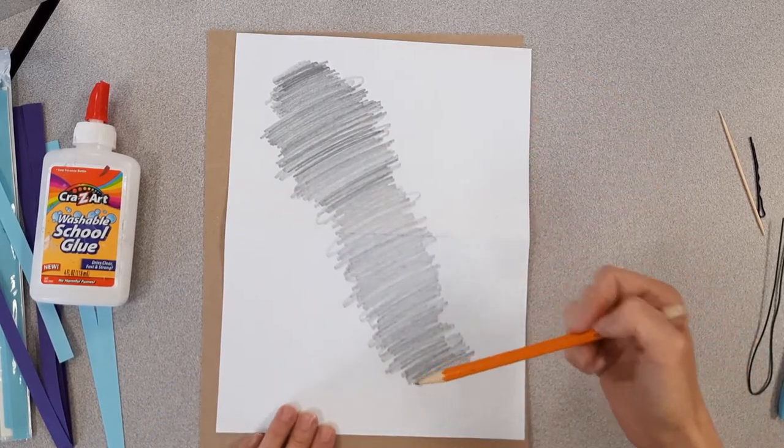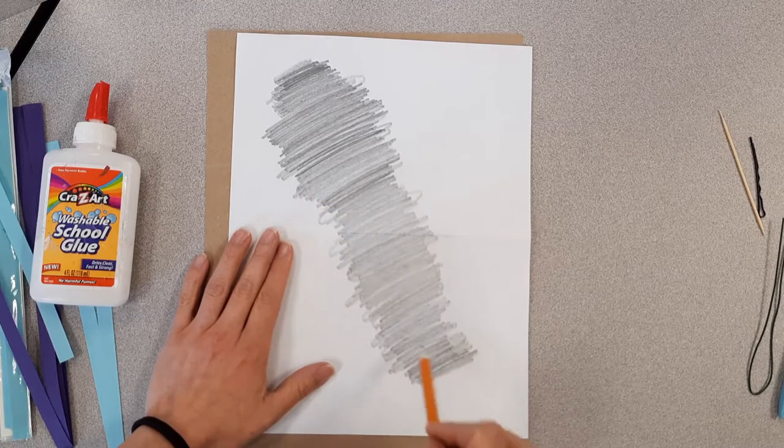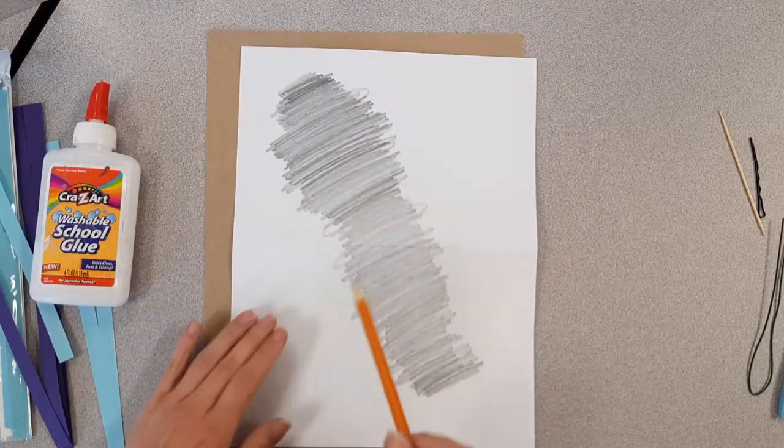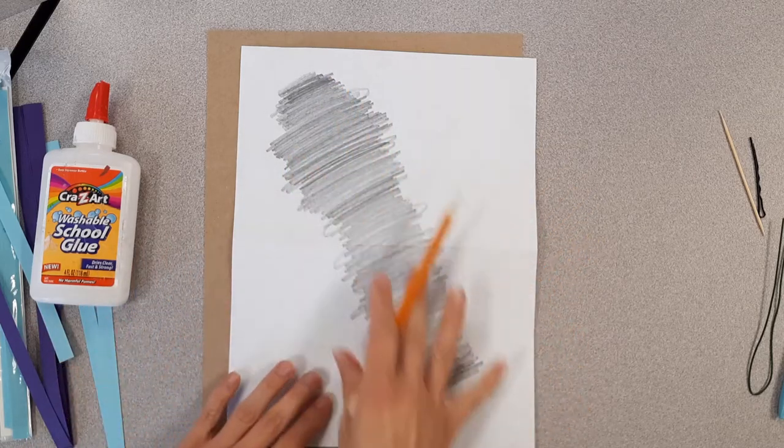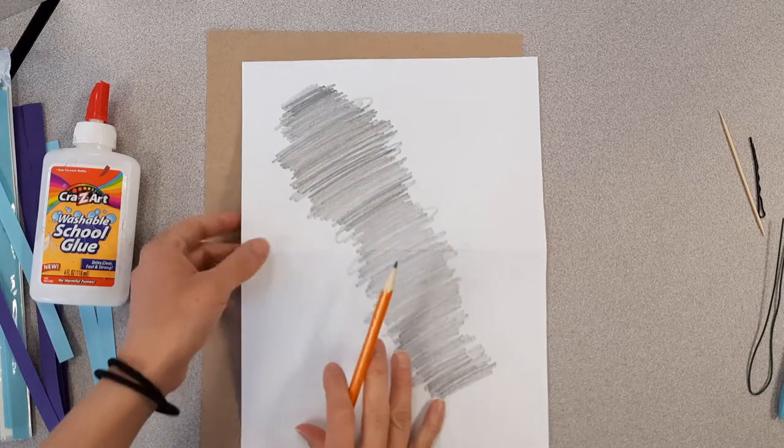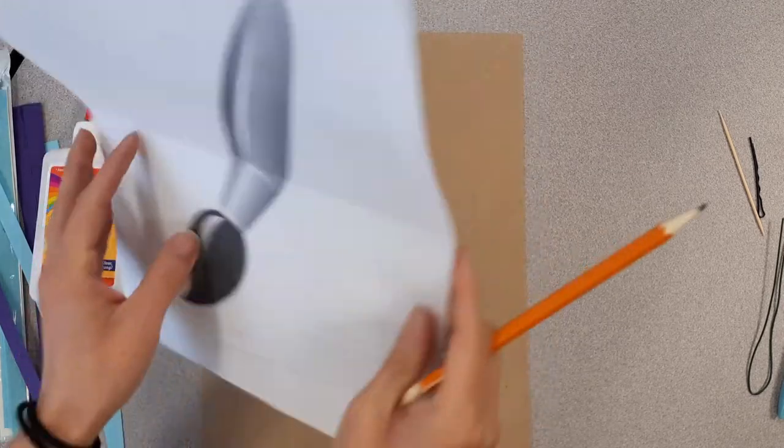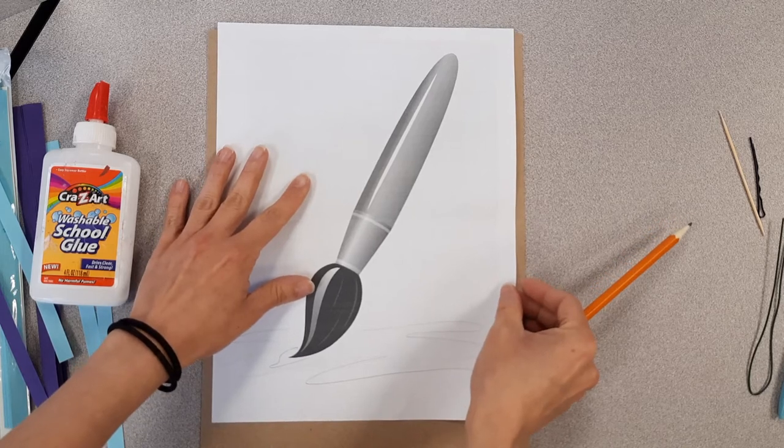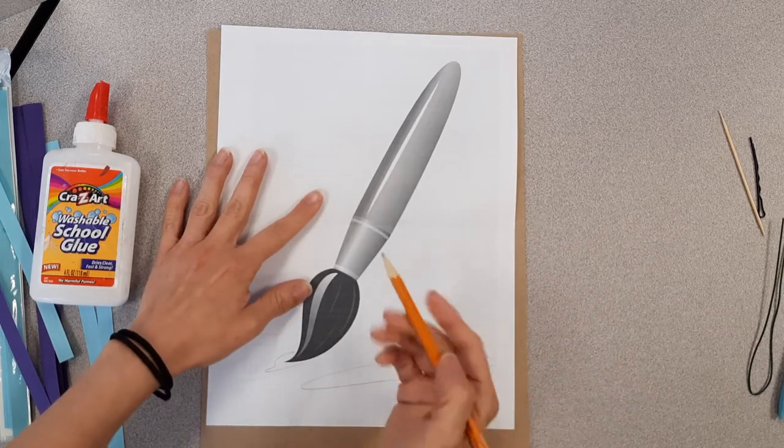I scribbled the whole thing. The reason I outlined it when I held it up to the light is because I just want to scribble what I need, I don't want to scribble the whole sheet of paper. Also try to pick simple images, something that's not super complicated. We are going to turn this around and place it.